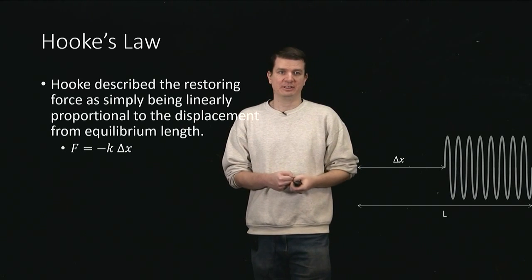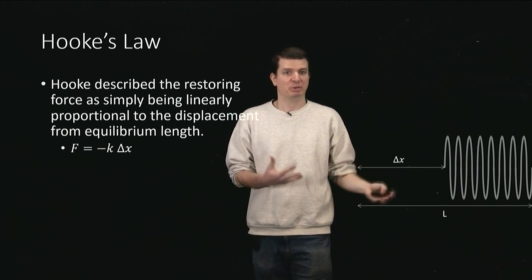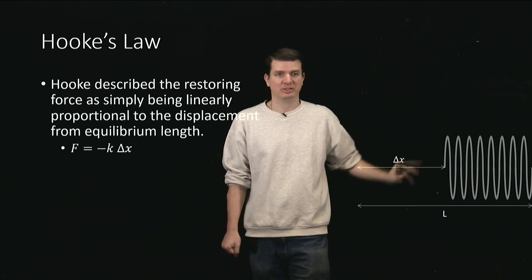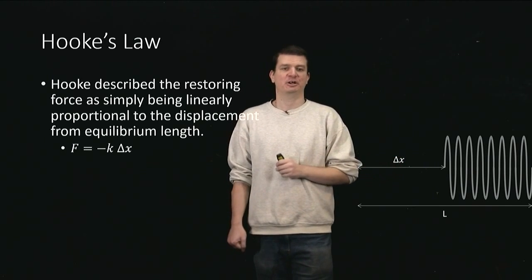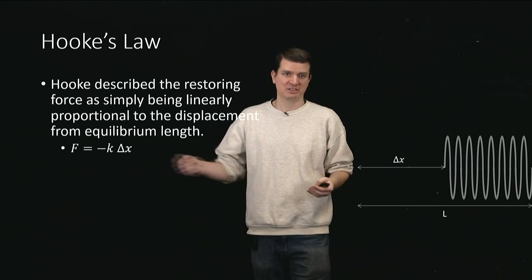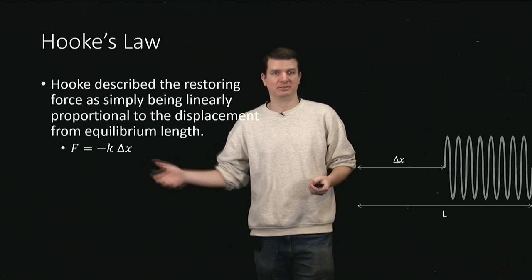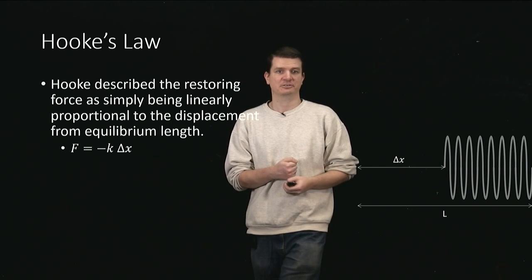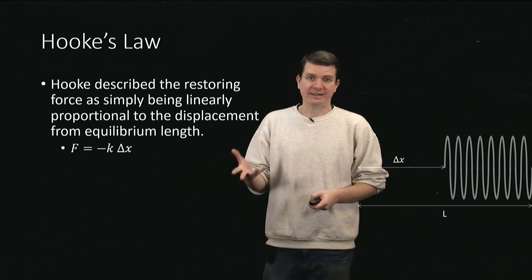The negative sign is the really important thing. That is what's conveying the fact that it's opposing the change. So if we've compressed it, the negative sign means the force is opposite to that displacement. And again, also if you stretch it, then the displacement becomes in this direction. The negative sign tells you the force is that direction. And that is Hooke's law.